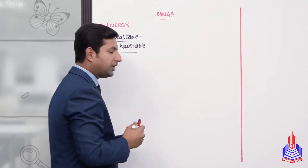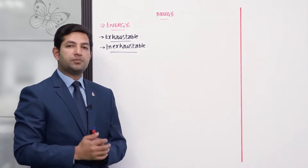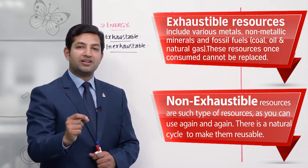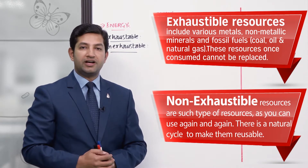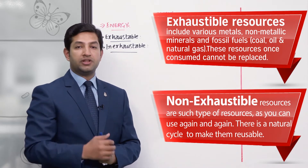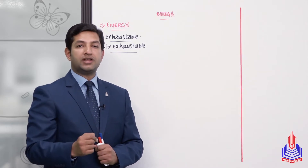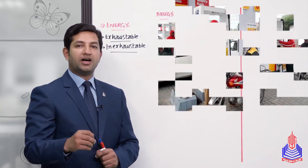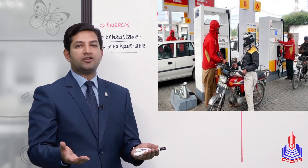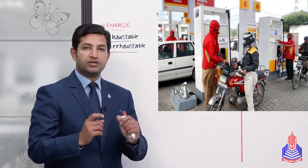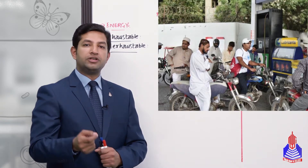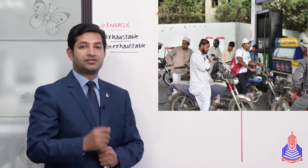Exhaustible سے مراد ہے کہ اس طرح کے قدرتی وسائل جن کو اگر آپ استعمال کرتے چلے جائیں تو ایک دن وہ مکمل طور پر ختم ہو جائیں گے۔ جیسے گاڑی یا بائک کی ٹینکی میں پیٹرول بھر لیں تو it cannot be recycled, it cannot be renewed in a shorter span۔ تو یہ fossil fuels exhaustible natural resources ہیں۔